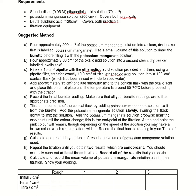We are going to be looking, first of all, at determining the iron content within an iron supplement tablet. The way we're going to do this is by standardising some potassium manganate using ethane dioic acid — that's oxalic acid, probably called in the lab just by its old name, but the proper chemical name is ethane dioic. Once we've standardised the potassium manganate, we'll use it to react in a redox reaction with the iron content in the tablet itself.